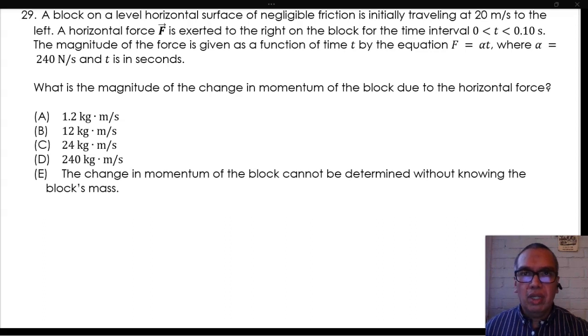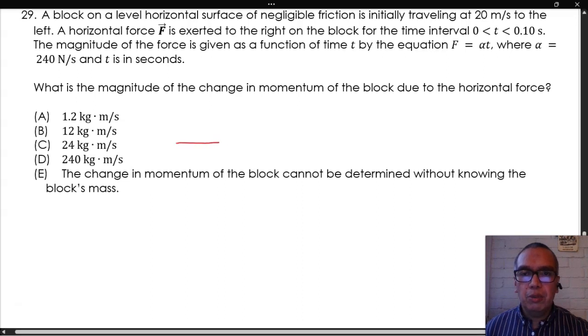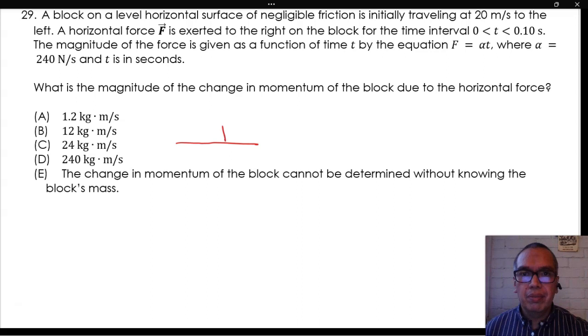A block on a level horizontal surface of negligible friction is initially traveling at 20 meters per second to the left. A horizontal force F is exerted to the right on the block for the time interval from 0 to 0.10 seconds.